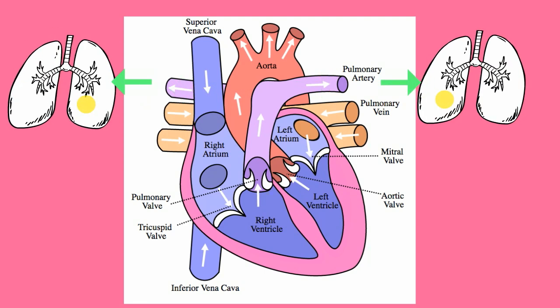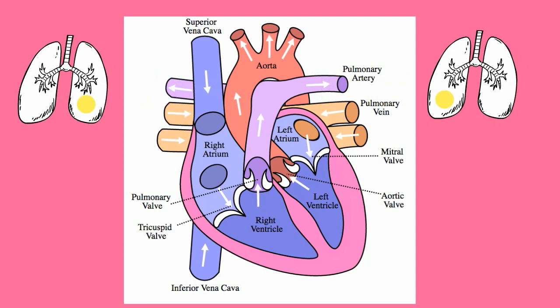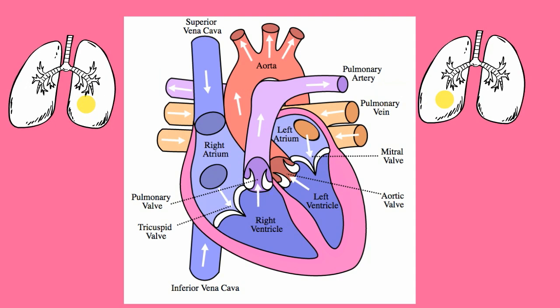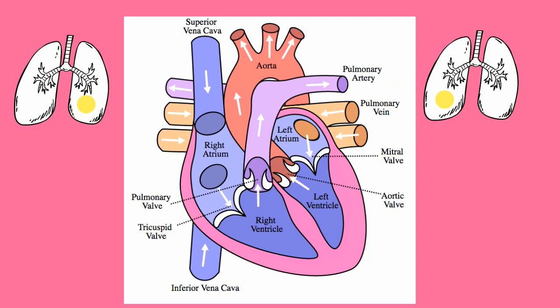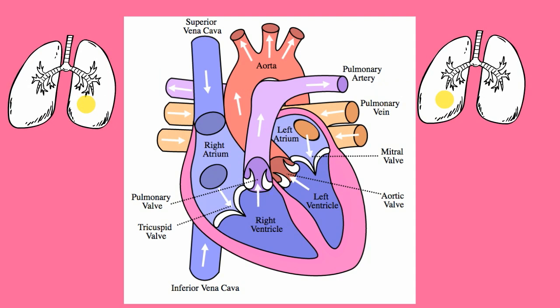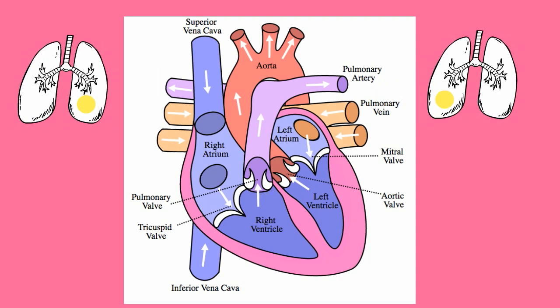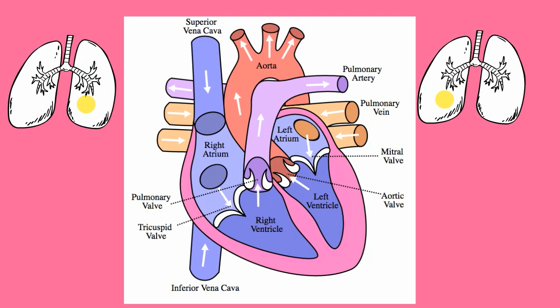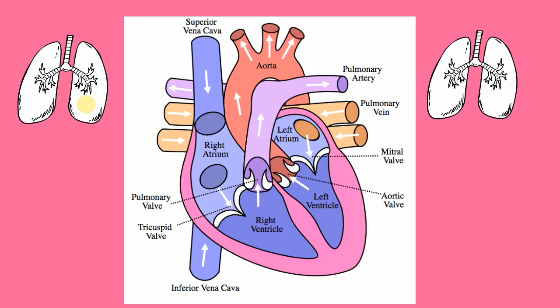In the lungs, carbon dioxide is exchanged for oxygen, and the blood returns to the left side of the heart by way of the pulmonary veins.